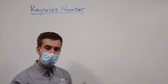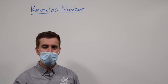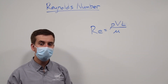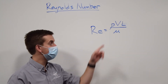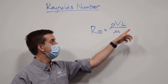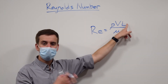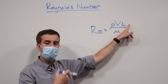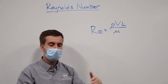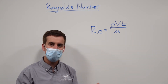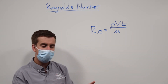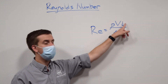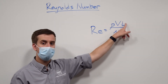So, enters the Reynolds number. The Reynolds number is defined as the density of the fluid multiplied by the velocity of the fluid times some length. Usually we choose the distance between the leading edge — the front edge of a wing — and the back edge, and we call that the chord. So usually we use the chord right here.